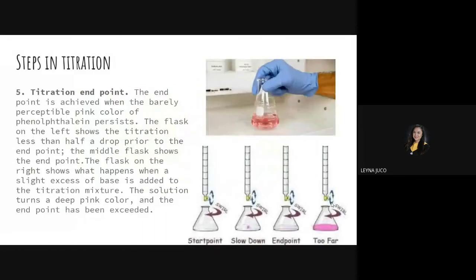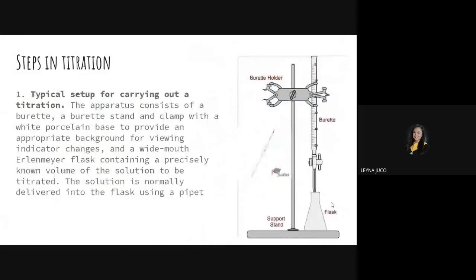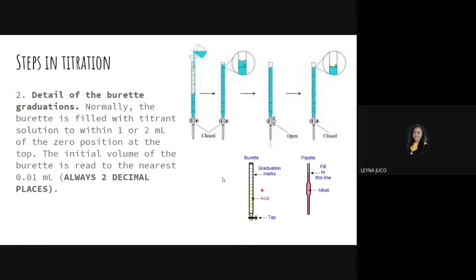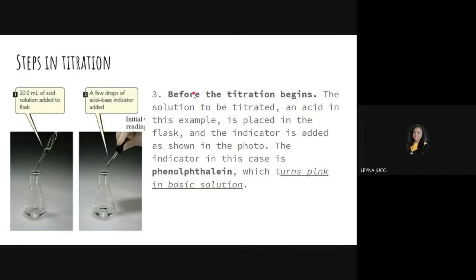To summarize the steps: set up your experiment; put the standard solution or titrant inside the burette using a funnel; read the initial volume of the burette, always to two decimal places — even if exactly at 5, write 5.00. Before the titration begins, place your sample of unknown concentration but known volume (e.g., 20 ml of acid) in the Erlenmeyer flask and add a few drops of phenolphthalein indicator.